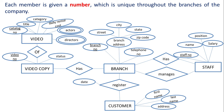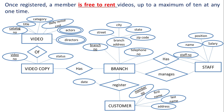Each member is given a number which is unique throughout the branches of the company, so member number is the primary key of the entity customer. Once registered, a member is free to rent videos up to a maximum of 10 at any one time. Hence, there is an association between customer and video copy, as the customer is taking an individual copy of the video.